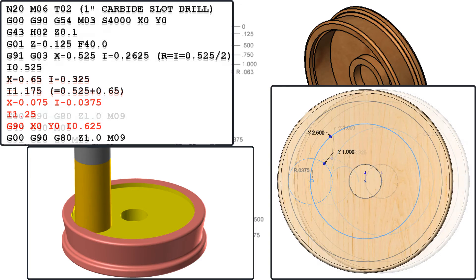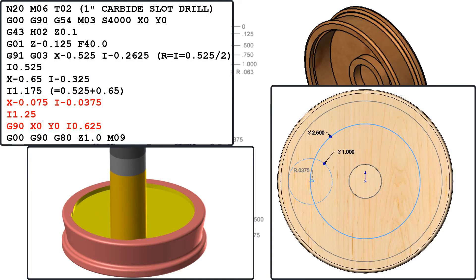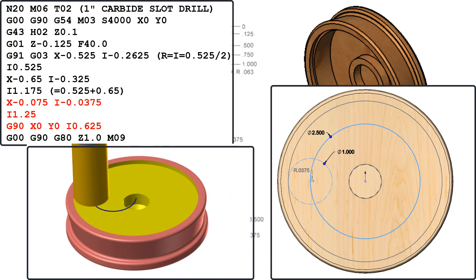To code the third and final cut for this 3.5 inch diameter I'll enter X-0.075, I-0.0375 to arc into the cut and I 1.25 to take the final pass.